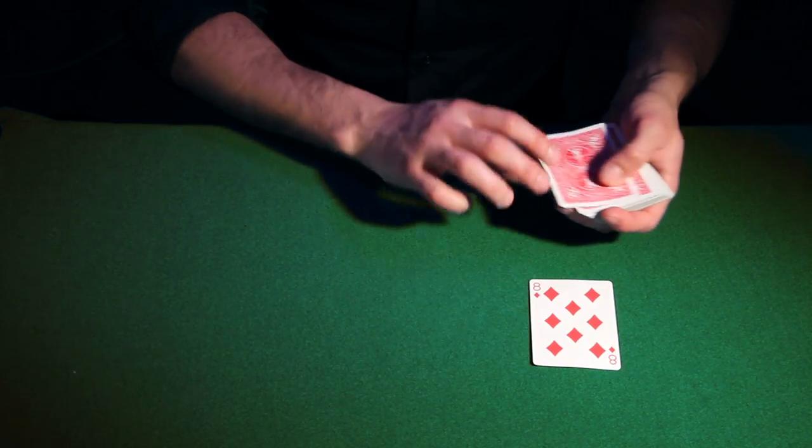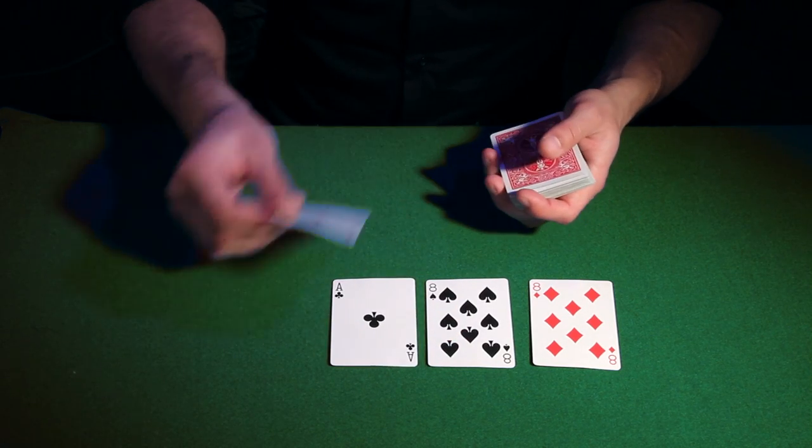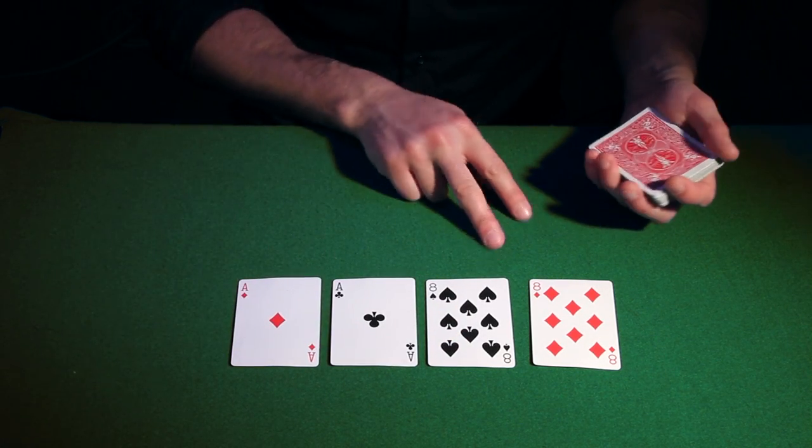The second lowest winning hand is two pairs. A pair of eights plus a pair of aces, for example.